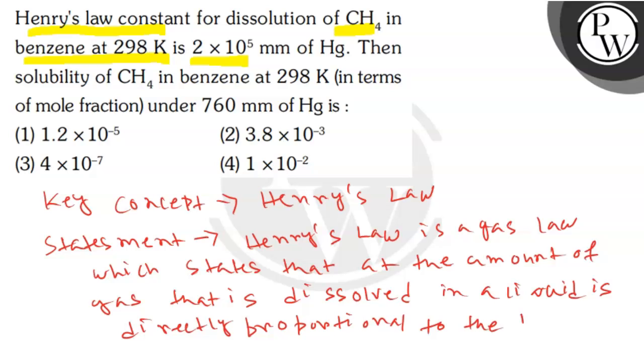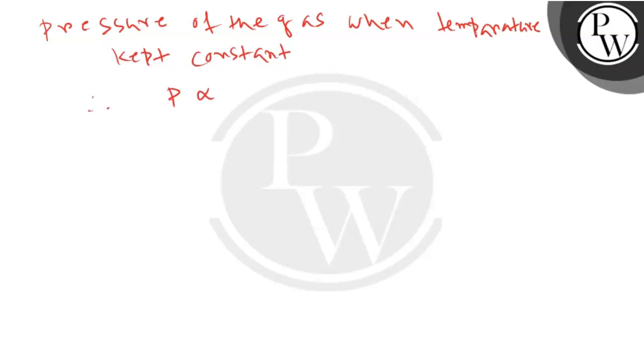of the gas when temperature is kept constant. Therefore P varies as C, or P is equal to KH into C